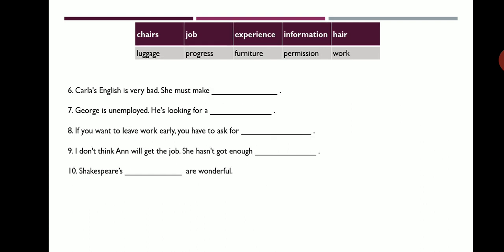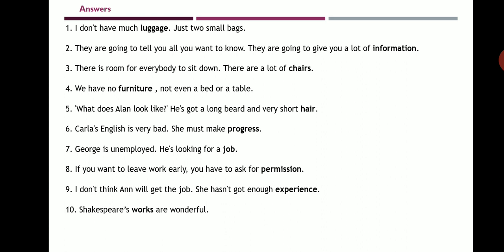Sixth: 'Carla's English is very bad. She must make dash.' The answer is progress. Seventh: 'George is unemployed. He is looking for a job.' Eighth: 'If you want to leave work early, you have to ask for permission.' Ninth: 'I don't think Anne will get the job — she hasn't got enough experience.' Tenth: 'Shakespeare's dash are wonderful.' The answer is works.